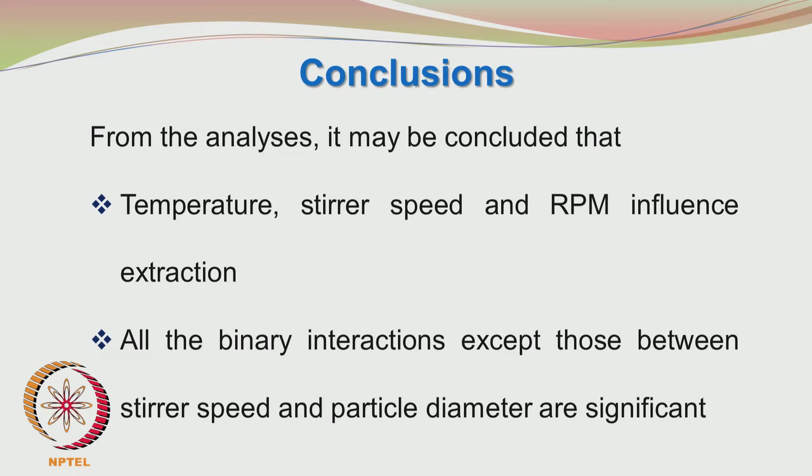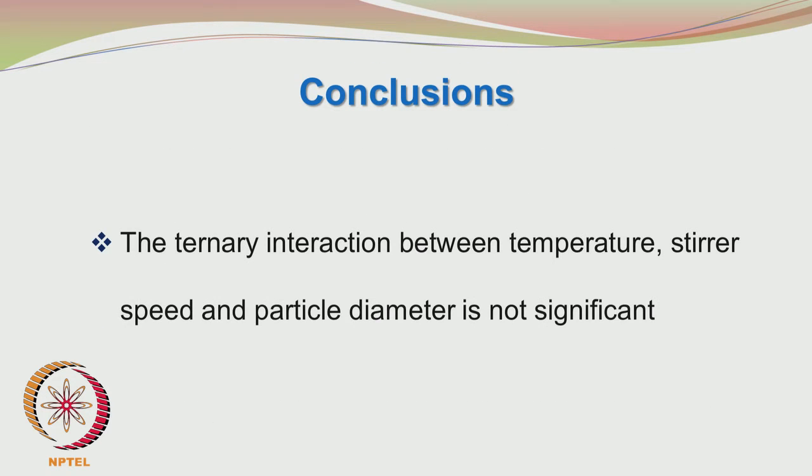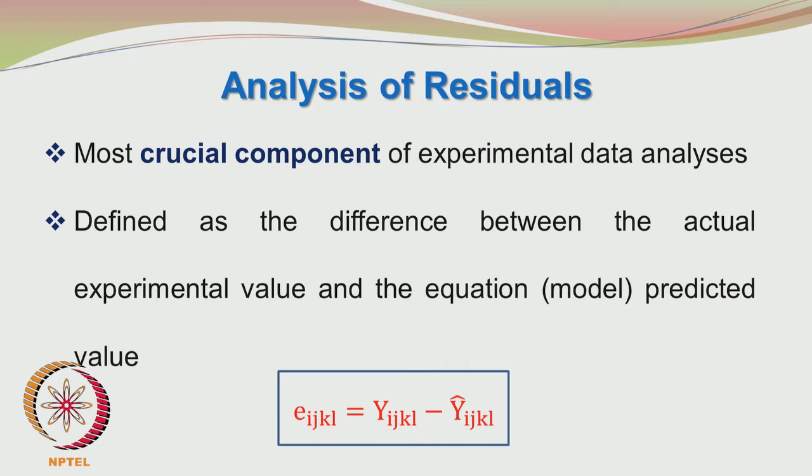From the analysis it may be concluded that temperature, stirrer speed, and RPM influence the extraction. All the binary interactions except those between stirrer speed and particle diameter are significant. The ternary interaction between temperature, stirrer speed, and particle diameter is not significant. Another way to detect important effects is the use of normal probability plots, where the different factors and their interactions are plotted to identify which effects are significant.